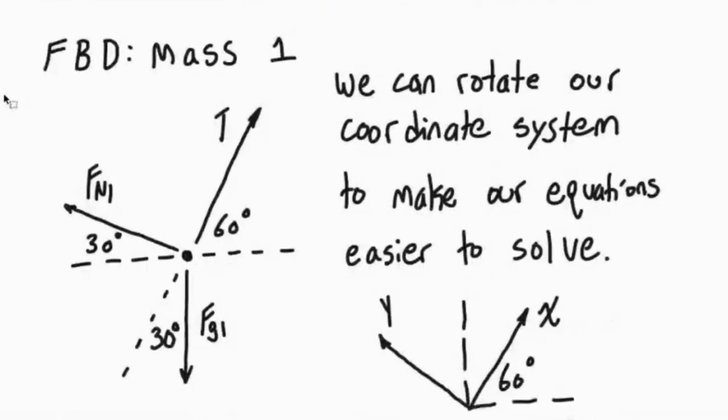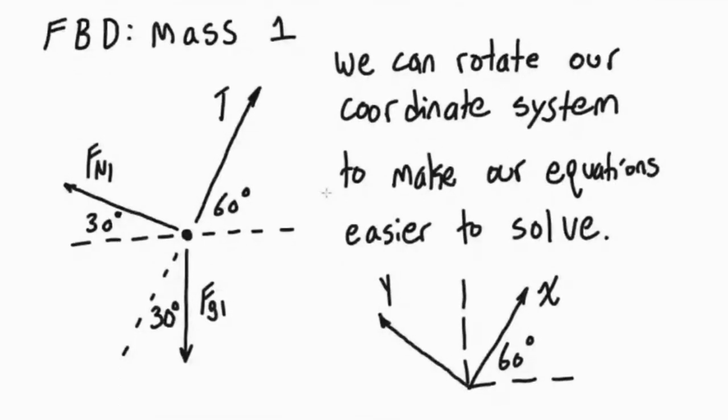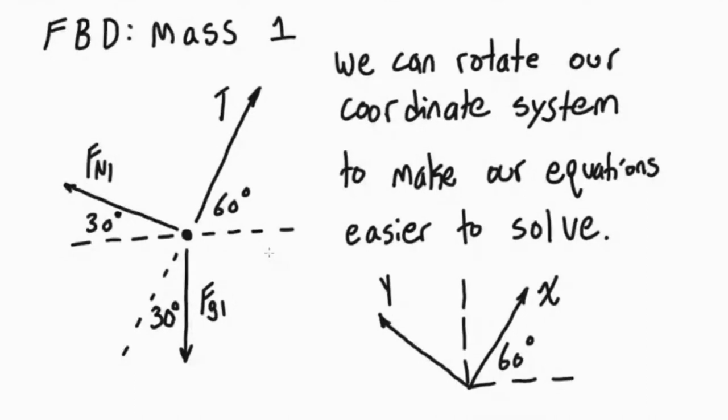So if we draw our free body diagram for mass number 1, we've got our tension, which is going upwards 60 degrees from the horizontal. And then we've got that normal force, which is going to be perpendicular to that surface, 30 degrees up. And then we've got the force of gravity going downwards.